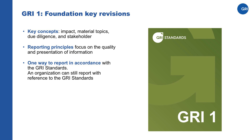There have been three key revisions. First, we outlined the four key concepts that form the Foundation for Sustainability Reporting with GRI, which are Impact, Material Topics, Due Diligence and Stakeholder. These concepts are defined from the perspective of impact materiality. GRI standards focus on the outward impacts that organizations have on the economy, environment and people.